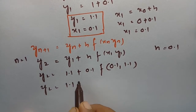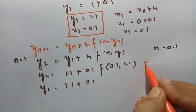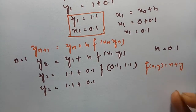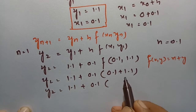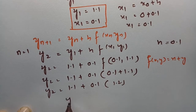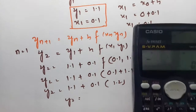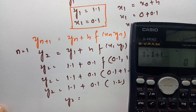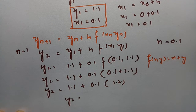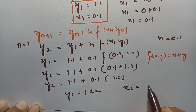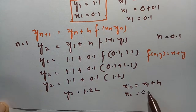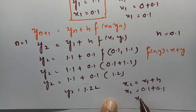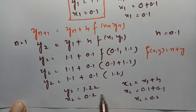So y_2 = 1.1 + 0.1 · f(0.1, 1.1). Since f(x, y) = x + y, we add: 0.1 + 1.1 = 1.2. Therefore y_2 = 1.1 + 0.1 × 1.2 = 1.1 + 0.12 = 1.22. And x_2 = x_1 + h = 0.1 + 0.1 = 0.2.